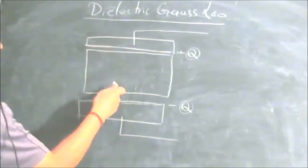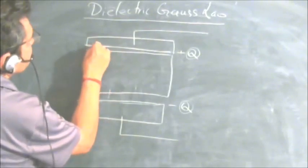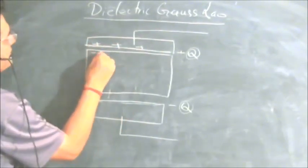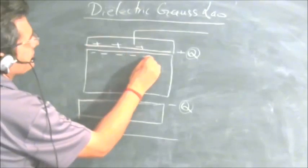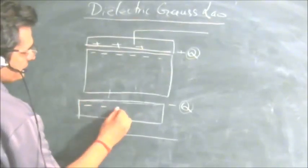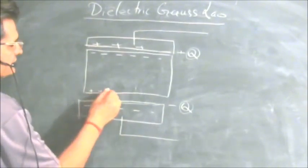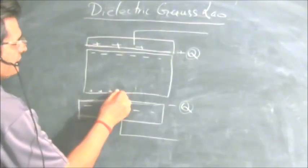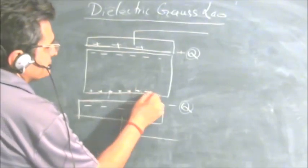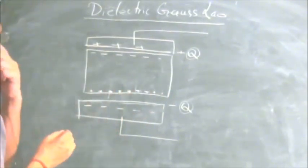If the capacitor plate is positive, you will have negative induced charge on the near side of the dielectric, and since the other plate is negative, you will have positive induced charge on the far side of the dielectric.